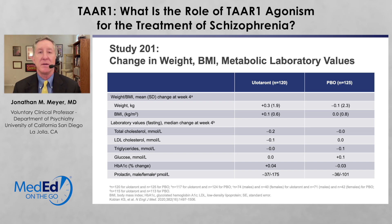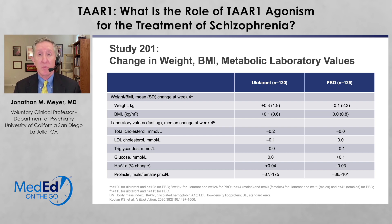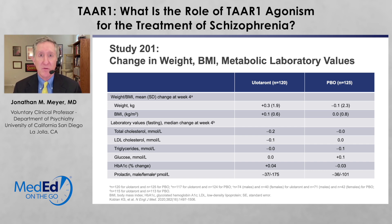We want our treatments to be tolerable as well as effective, and we seem to have achieved both with TAAR1 agonists. In summary, TAAR1 agonism is an exciting new strategy for the treatment of schizophrenia. It does not bind to D2 receptors, it appears to reduce positive symptoms without motor adverse effects, and with ulotaront we see significant reduction in negative symptoms — all without metabolic, endocrine, or motor adverse effects. We really are looking at a revolution in the treatment of schizophrenia, and we're very excited to see what the future holds for TAAR1 agonism. This is Dr. Jonathan Meyer — thank you for watching.